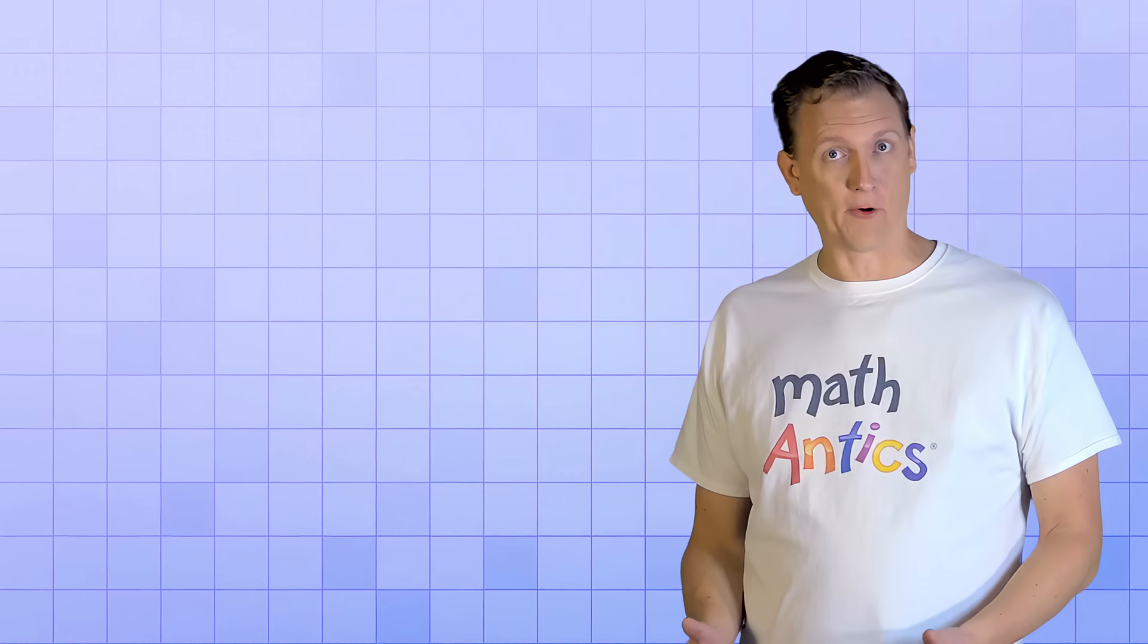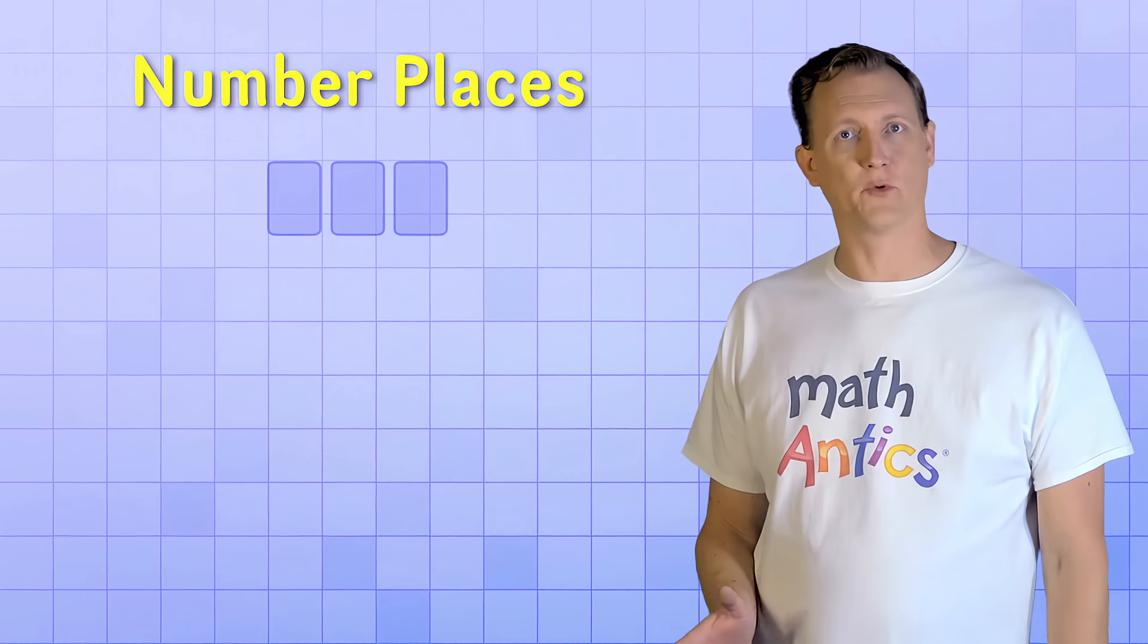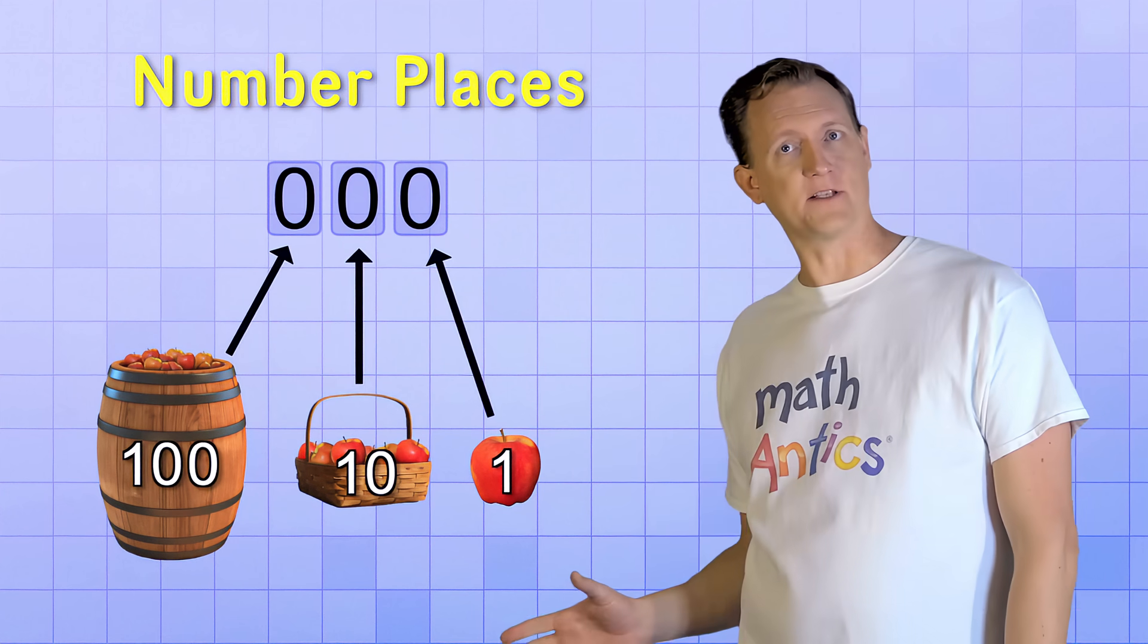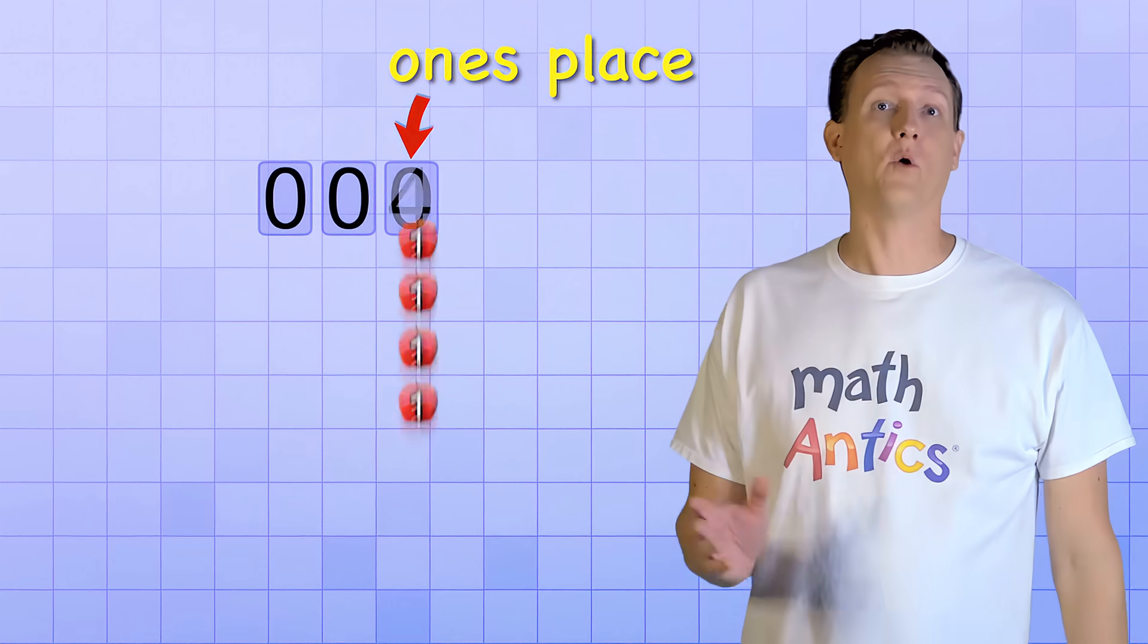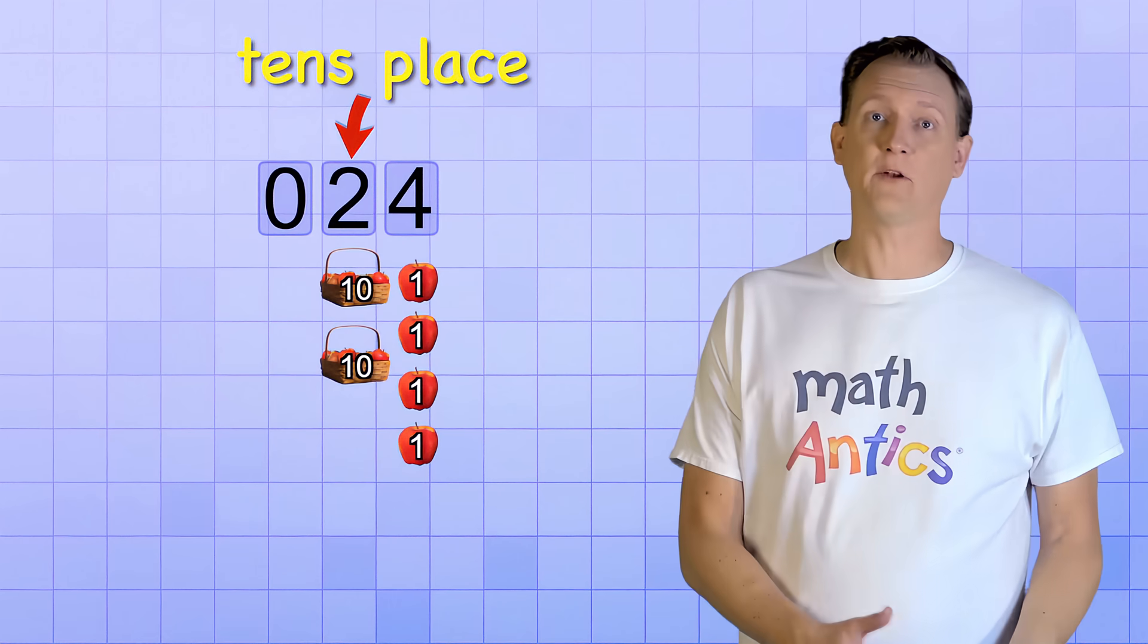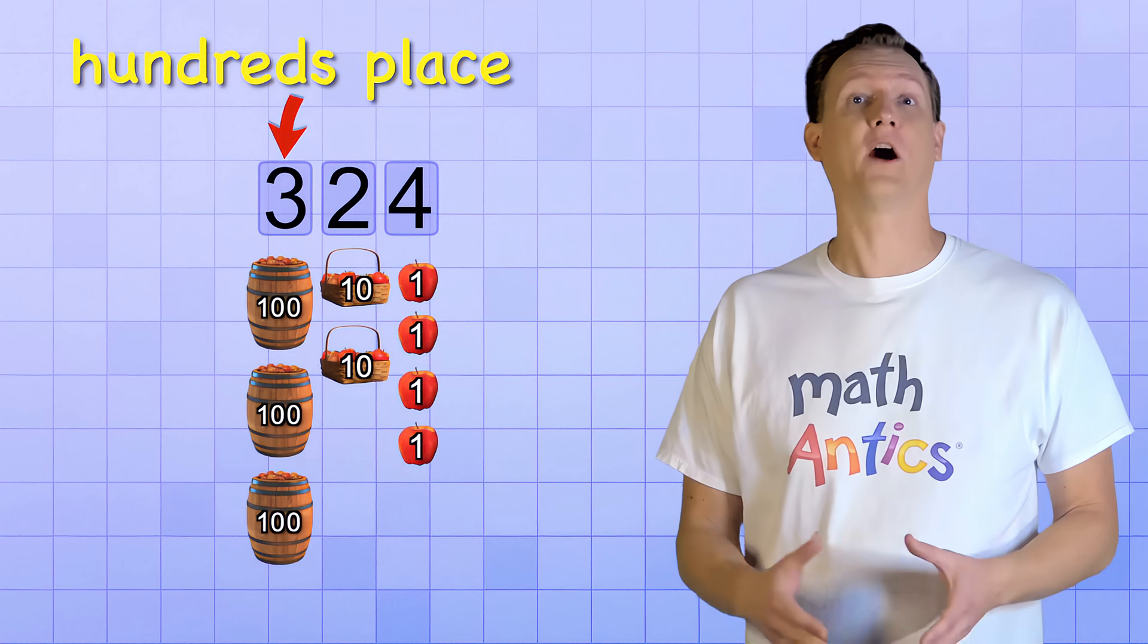Are you starting to see how our base 10 number system works? It uses different number places to represent the different size groups that we use to count. And the digits in those number places tell us how many of each group we have. The digit in the ones place tells us how many ones we have. The digit in the tens place tells us how many groups of 10 we have. And the digit in the hundreds place tells us how many groups of 100 we have.